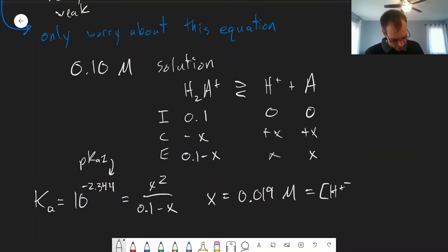And remember, that's equal to H plus, which then we can put into a pH calculation using the negative log base 10. pH is equal to 1.72. So we get an acidic pH as we'd expect.